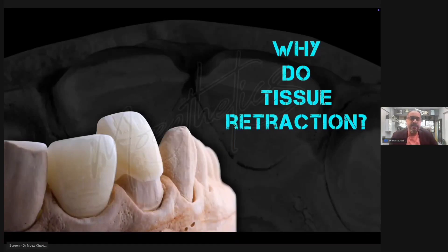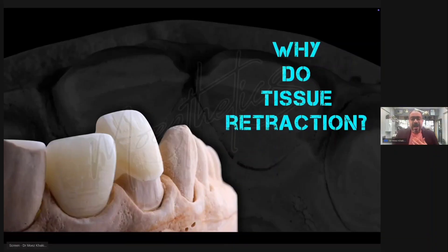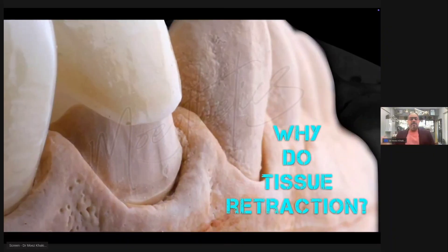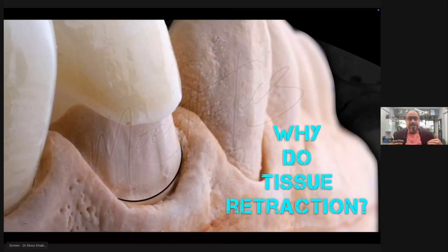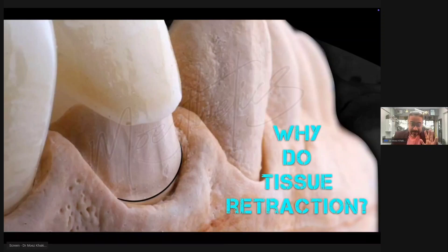Why should I do tissue retraction to begin with? The answer is simple: indirect dentistry is communicating with your technician. It's communicating what you have done, and you do that by making a good impression so that your technician knows exactly where your margin is. There is no guesswork here. Your technician should not have to sit with a telescope. If the technician cannot find the margin, they will create one — and that may not match your margin, and then the patient has to suffer for years together.